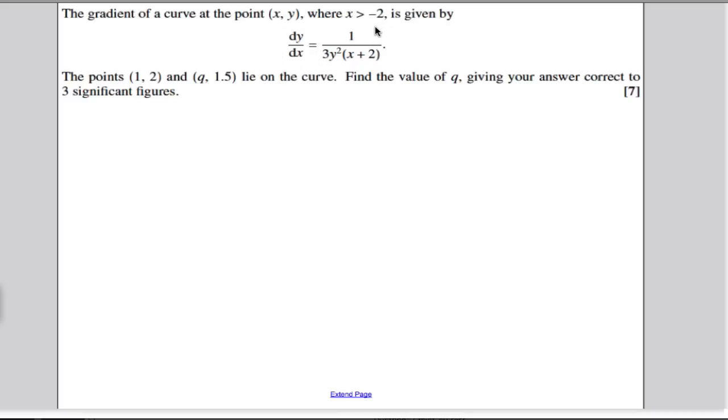Everything with y on the left-hand side, everything with x on the right-hand side. So, multiply everything by 3y squared, multiply everything by dx and integrate, and we get the following. We get the integral of 3y squared dy is equal to the integral of 1 over x plus 2 dx as our first line.